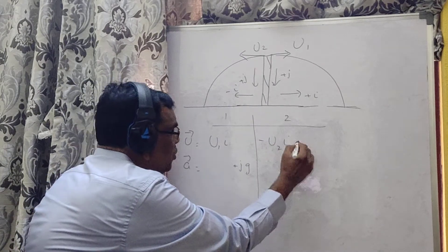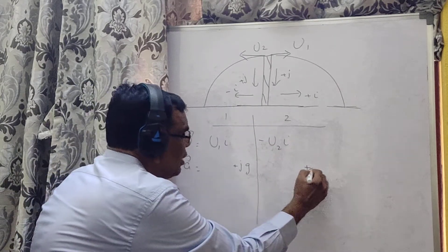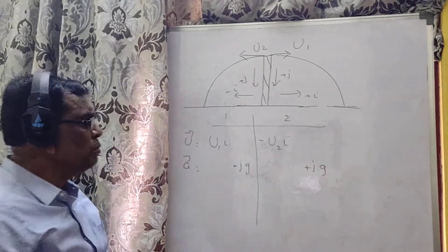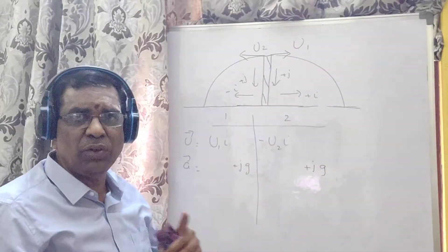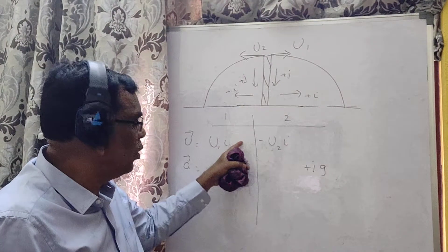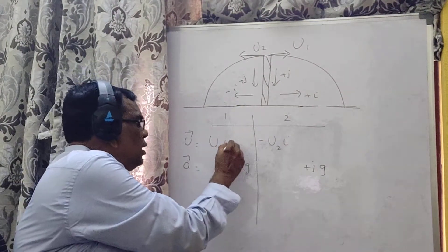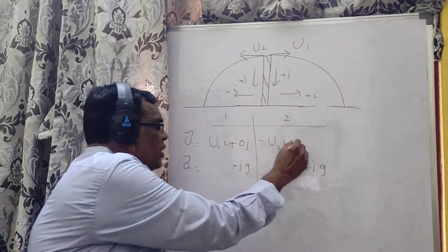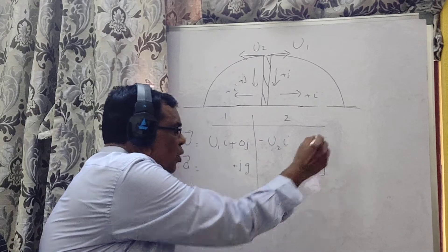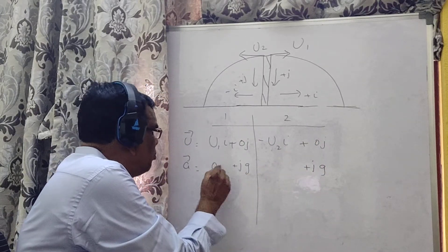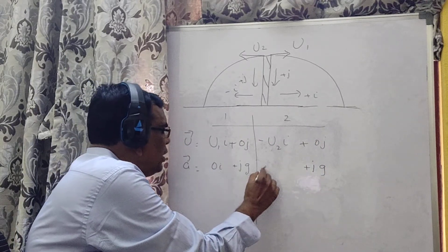Here what do I write? Minus u2i and here it is plus jg. I think the previous case, if you recall, I put 0 for u to be a little more specific. This is all for your convenience I am putting it, otherwise it is meaningless.